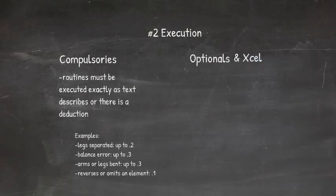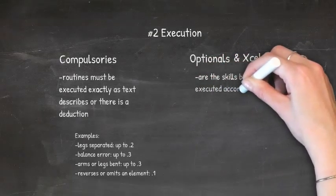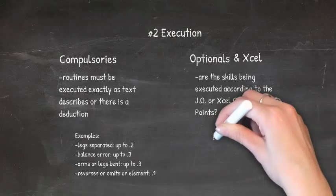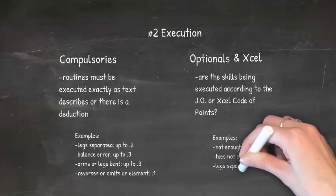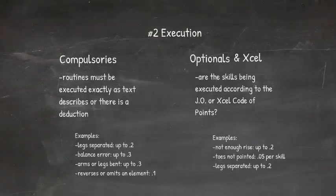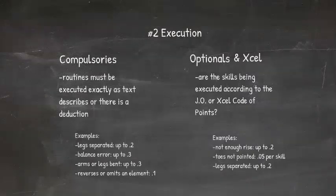For optional routines, skills are also evaluated for execution. For every skill the judge asks whether it is being executed perfectly according to the Junior Olympic code of points, and if not, they determine the applicable execution deductions. For example, leaps, hops, or jumps that don't rise up enough off the floor or beam can be up to two tenths; toes not pointed could be a half-tenth; and legs or knees separated could be up to two tenths. Judges have a full code of points listing deductions appropriate for each skill.